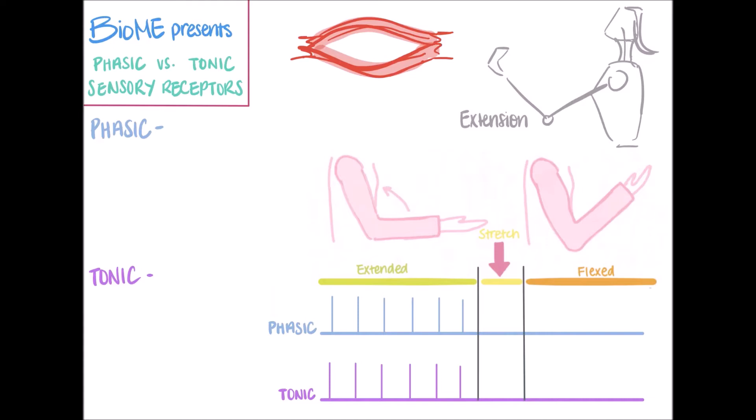Muscle spindles are located in your skeletal muscles. I have a rough sketch of a skeletal muscle here in the middle, and muscle spindles can be found here in the skeletal muscle belly.